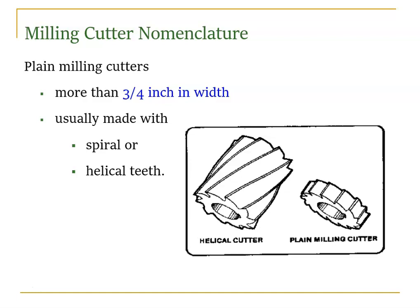Generally, a milling cutter has two types: one is spiral and another one is helical. A plain milling cutter has more than three-fourths of an inch in width. It may be different but generally we follow this length and width standard. It is made in two ways: helical and spiral. Spiral is also called plain, and it looks like a gear with land and teeth.